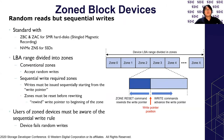Users of zoned block devices must be aware of this sequential write rule. If not — for example, if the user writes data to an address other than the write pointer — it becomes an unaligned write error. So that means random write is prohibited.